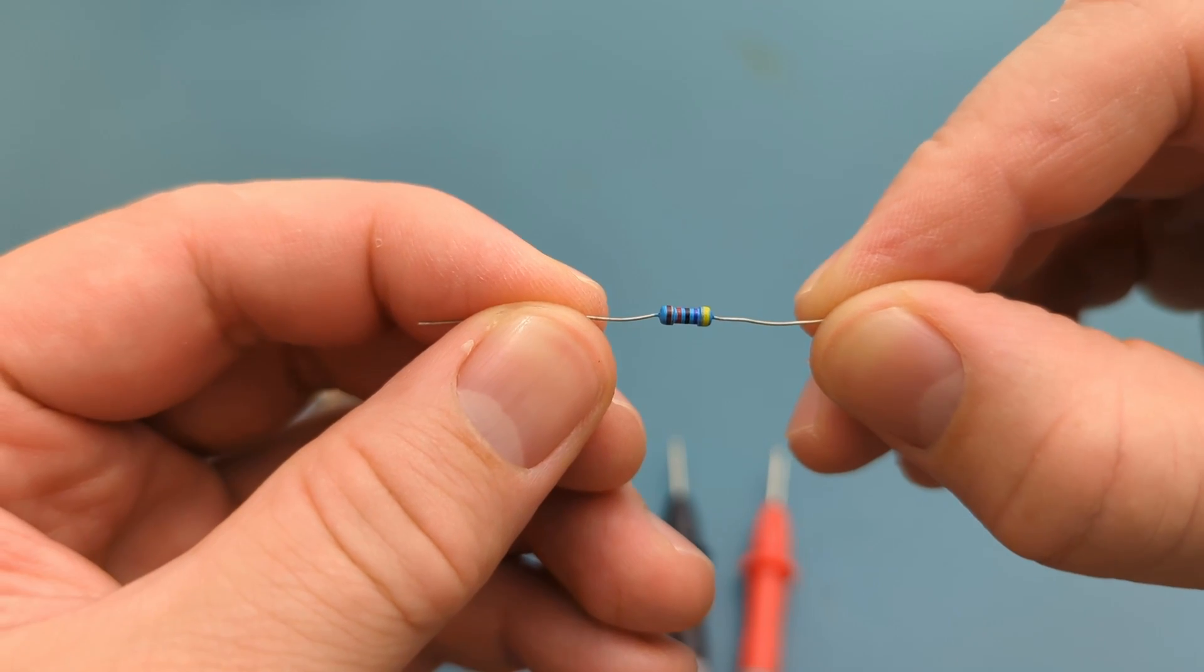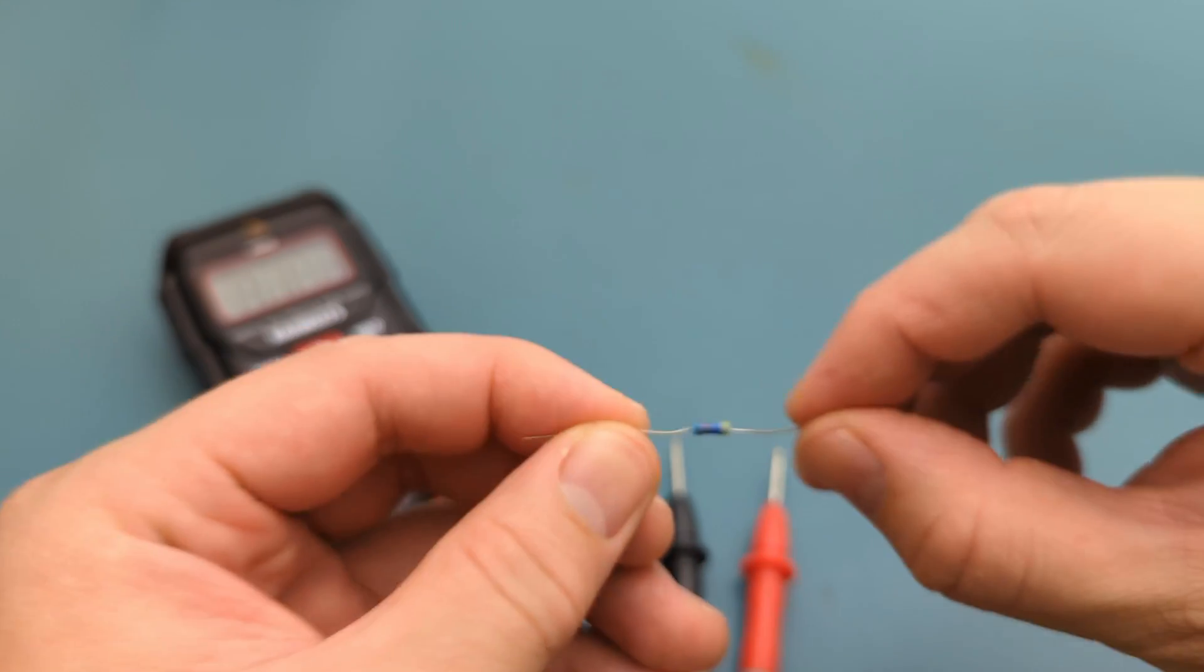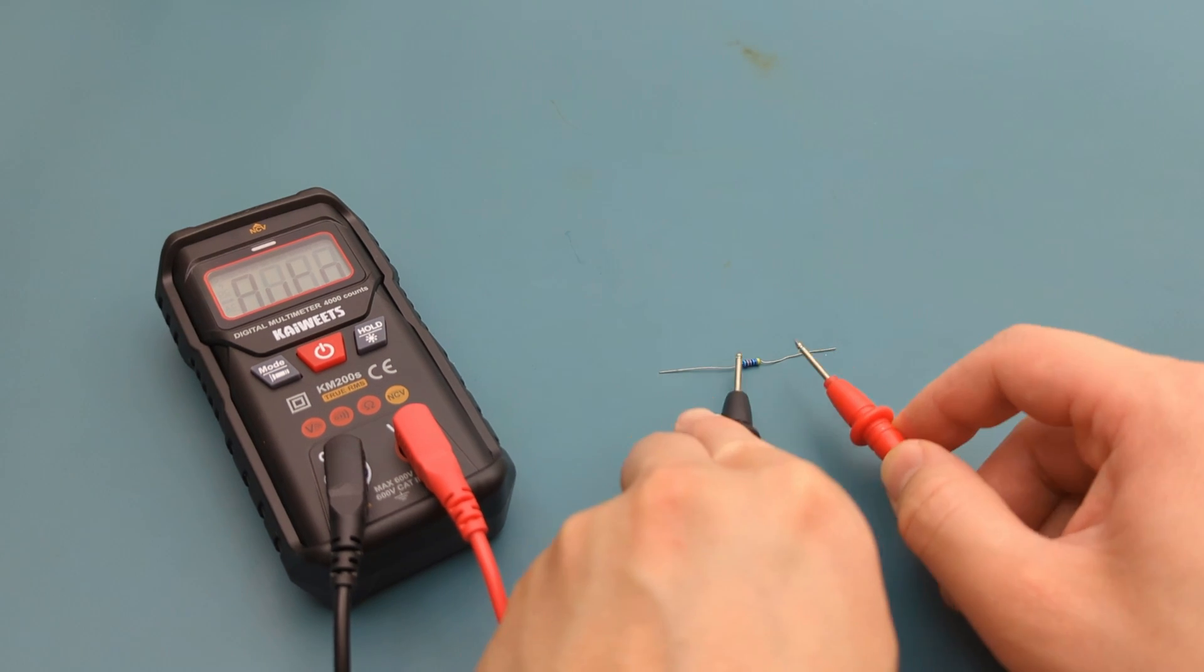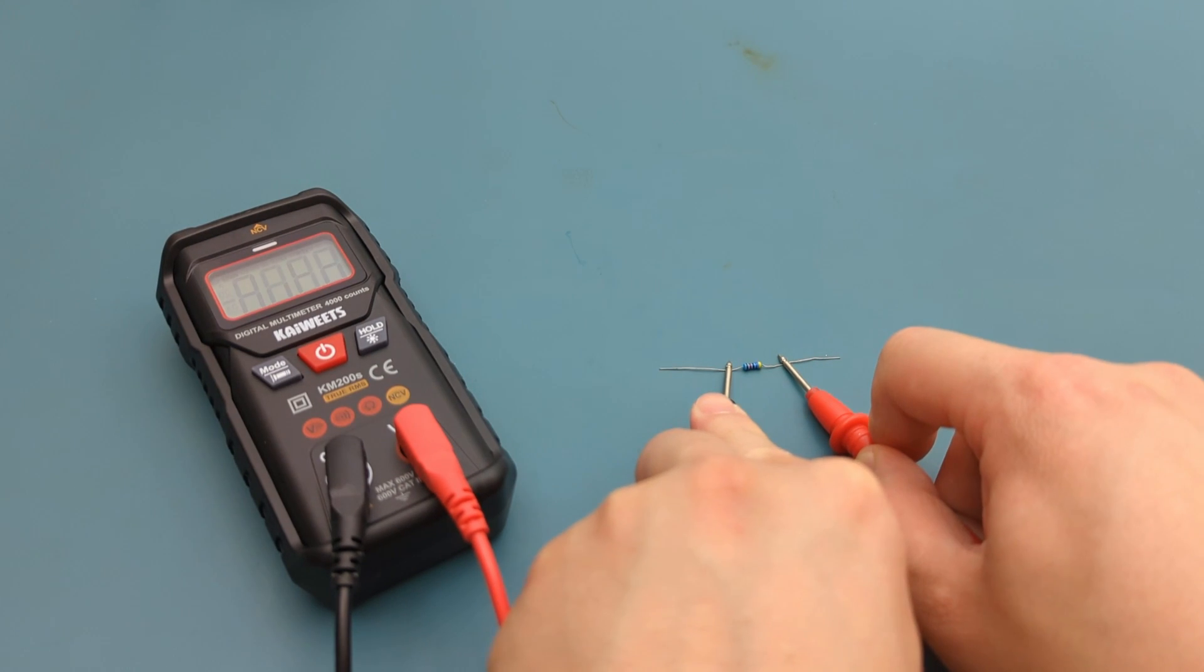The next step is to do the resistance test. This is a 47 ohm resistor. When I place the probes on the resistor, the meter shows about 47 ohms, just as expected.